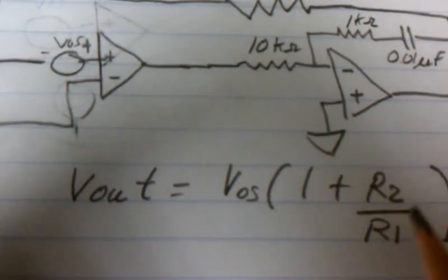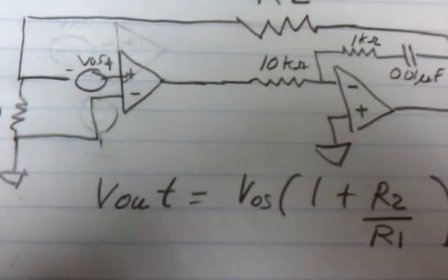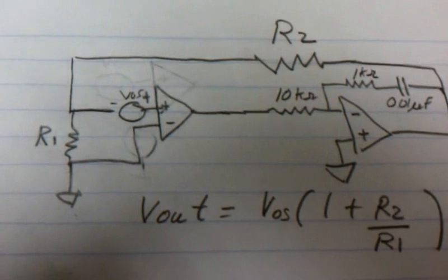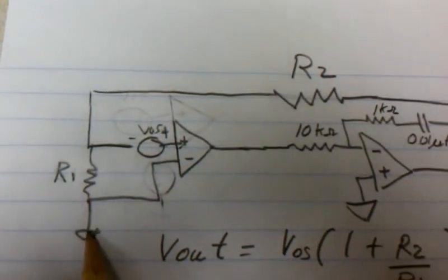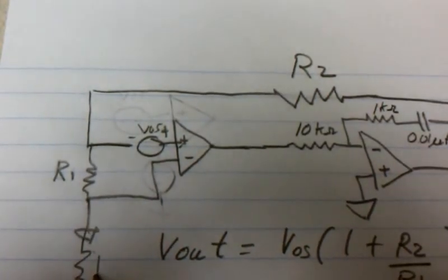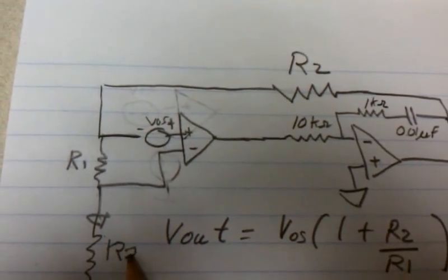This would be the equation for this circuit. And if we wanted to add in junction balancing resistors, I could just add another resistor here.